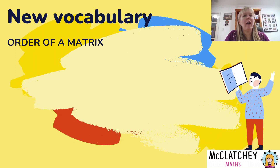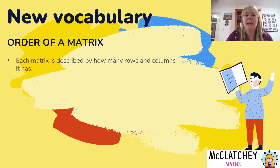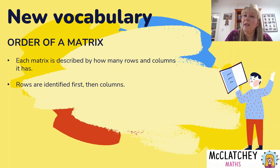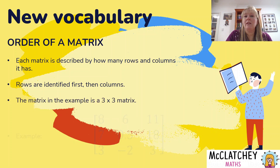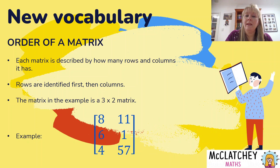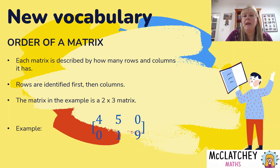We describe matrices in a certain way called the order of the matrix, and it's described by how many rows it has and how many columns it has. We identify the number of rows first and then the number of columns. So the example below is a three by three matrix — three rows, three columns. This one's a three by two — three rows, two columns. And this one's a two by three — two rows, three columns.